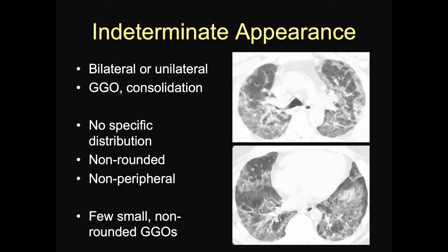Now let's talk about the indeterminate appearance. The indeterminate appearance doesn't have the typical features already discussed. It can be bilateral or unilateral and can consist of ground glass opacity and/or consolidation. Importantly, there's no specific distribution — it may be diffuse, it may be more central. The opacities may not be rounded, or you may just have very few small ground glass opacities. In this case, you can see a much more extensive abnormality with lots of ground glass opacity, still showing that peripheral arcading with spared lobules and normal lung admixed in there — but much more extensive lung disease.